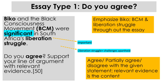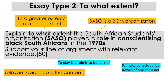Essay type two: 'To what extent did the South African Students Organisation, SASO, play a role in conscientizing black South Africans in the 1970s?' Support your line of argument with relevant evidence. For a 'to what extent' question, candidates need to decide whether it is to a greater extent or to a lesser extent. Key words highlighted include: to what extent, SASO, and the role of Black Consciousness in conscientizing black South Africans. To conscientize means to make people conscious — to be aware of — and then to act. Once you have taken a stance, you provide relevant evidence to support it.